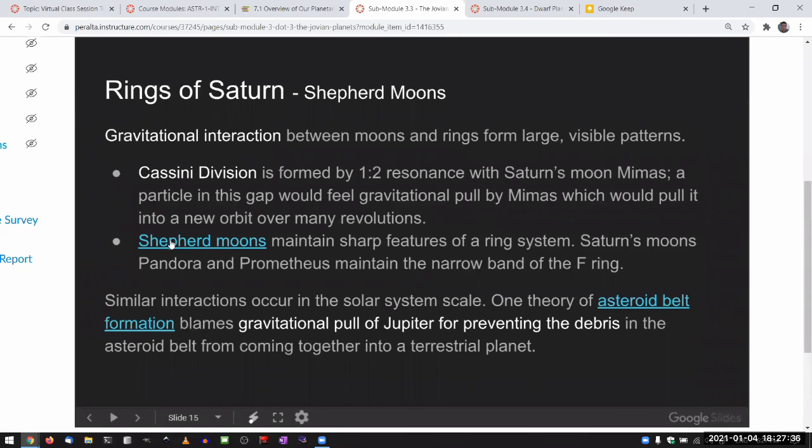You could almost say in some kind of microcosm kind of scale that shepherd moons clear the neighborhood of its own orbit around the planet that it's orbiting, or it's gravitationally affecting the neighborhood around it so that they maintain the sharp features of a ring system.